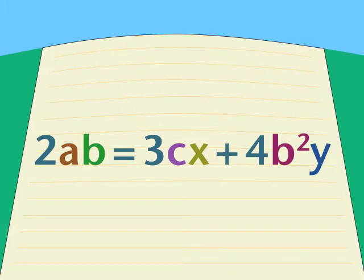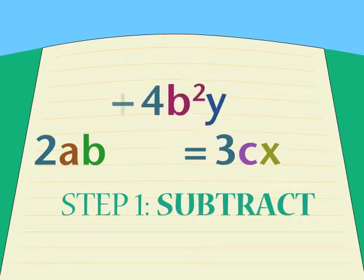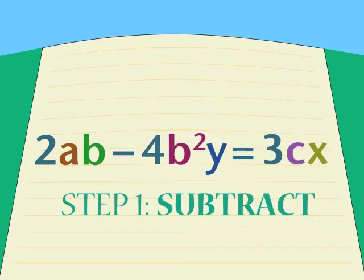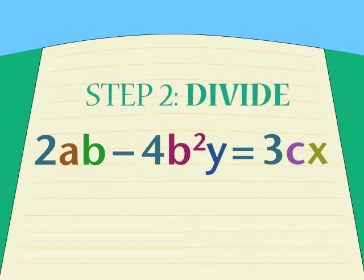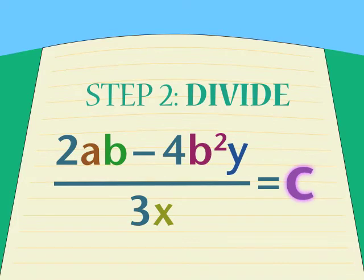How'd you do? Did you use steps something like these? Remember, it's the C we're after. Everything else we treat as numbers, and move to the other side. Think of it like this. Step 1. Remove 4b squared y to the other side by subtraction. Step 2. Remove 3x to the other side by division, leaving only C. Sound familiar? Let's do it.